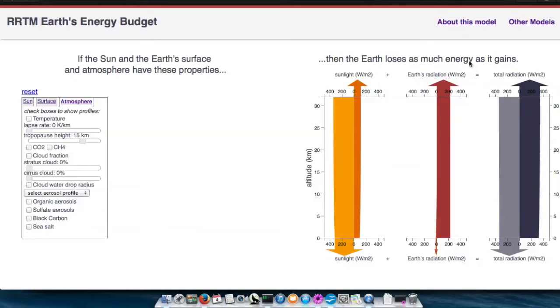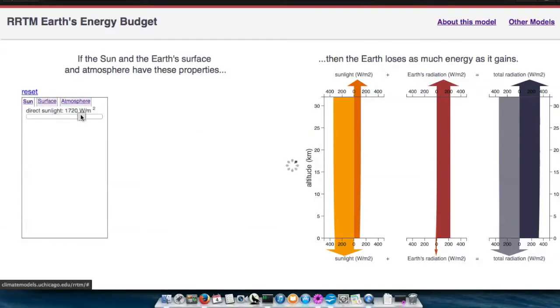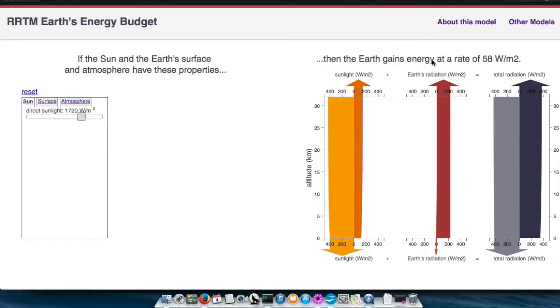Finally, you can see the overall energy balance of the planet in this sentence at the top. If the planet was out of balance, say we turned up the sunlight, this sentence would reflect that.